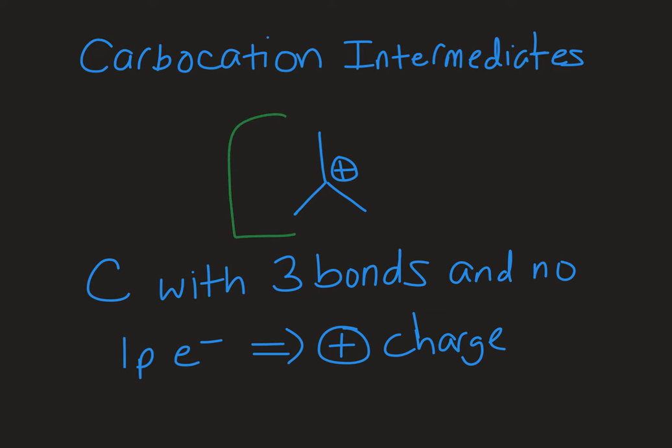So this is a carbocation intermediate right here. It's a carbon with three bonds and no lone pairs of electrons, so it doesn't have a full octet, it has an empty P orbital, and it's got a positive charge. The carbocation intermediate is trigonal planar. The three bonding groups coming off of it are all in one plane with bond angles of 120 degrees, and then it has that empty P orbital. That makes it an electron acceptor and an electrophile.